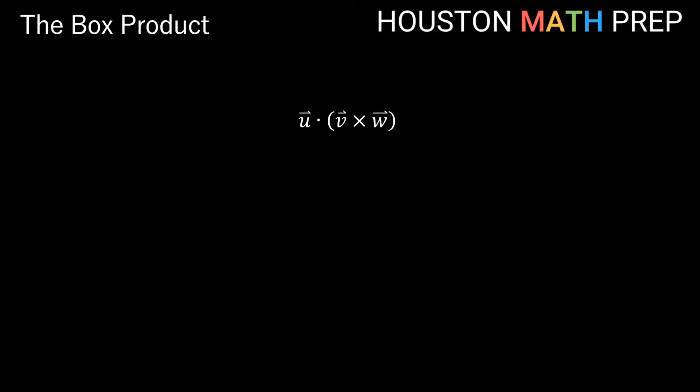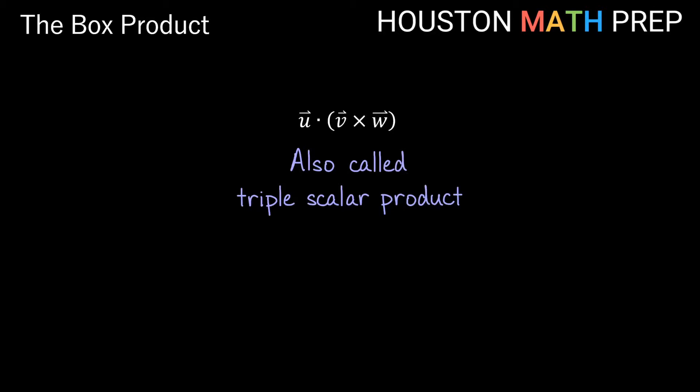This box product is also called the triple scalar product, partly because its calculation involves using three vectors. Let's take a look at what kind of answer we expect to get from this operation, based on our knowledge already of dot products and cross products.